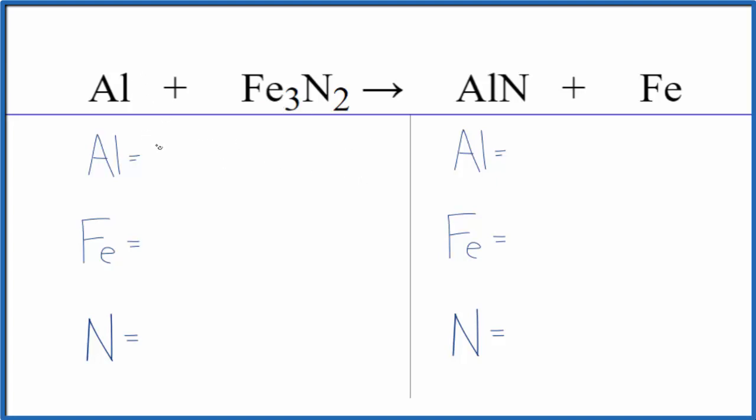We have one aluminum atom, three iron atoms, and two nitrogen atoms. On the product side we have one aluminum, one iron, and one nitrogen. Because the aluminum and iron are by themselves, they'll be very easy to balance.